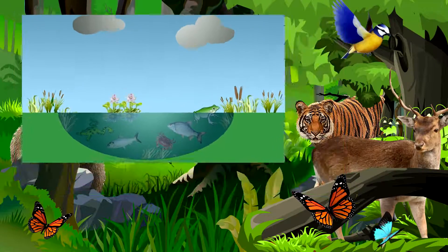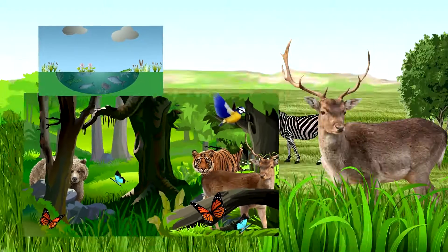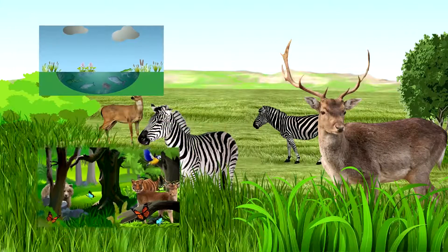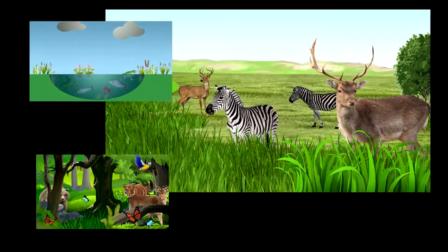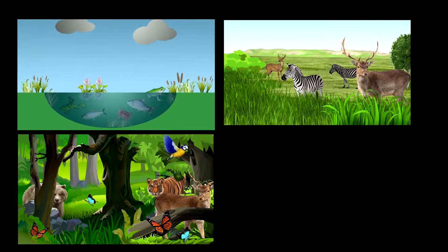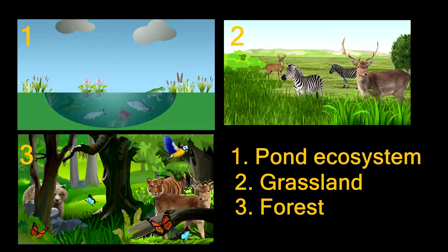Ecological diversity is the diversity of ecosystems in a specific geographical area. Suppose there is a pond ecosystem, some forest ecosystems, and some grassland ecosystems in a specific geographical area. The variety of those ecosystems in this geographical area is called ecological diversity.